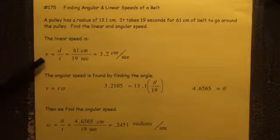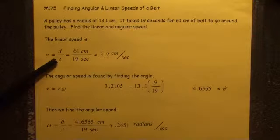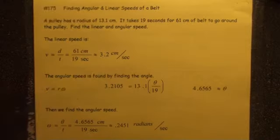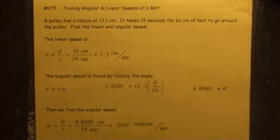Linear speed is found by just taking distance divided by time. So the distance was 61 centimeters divided by time, so 3.2 centimeters per second.